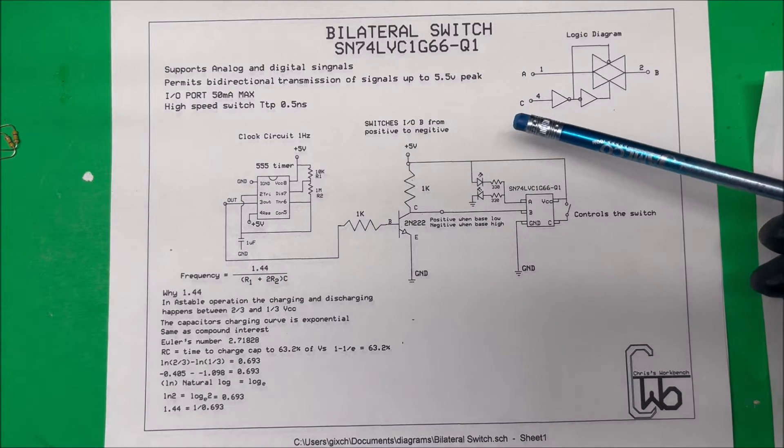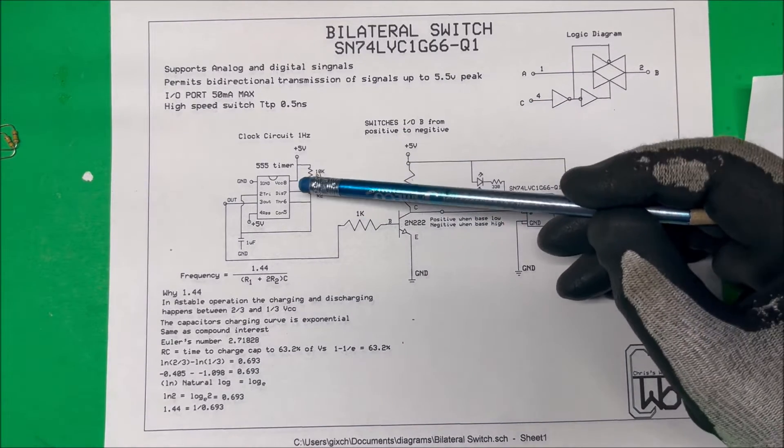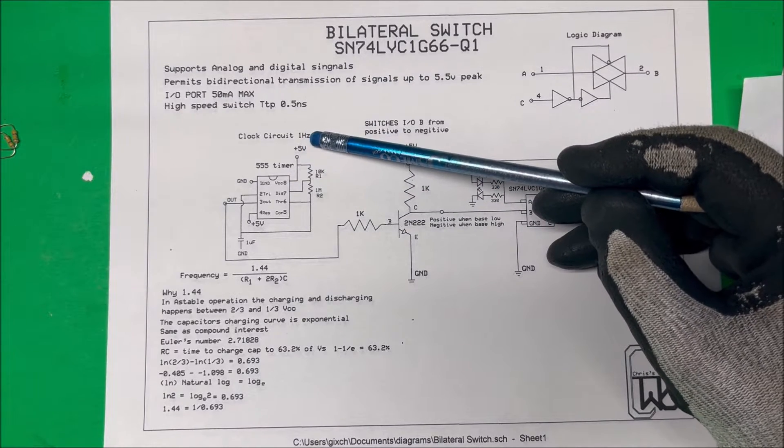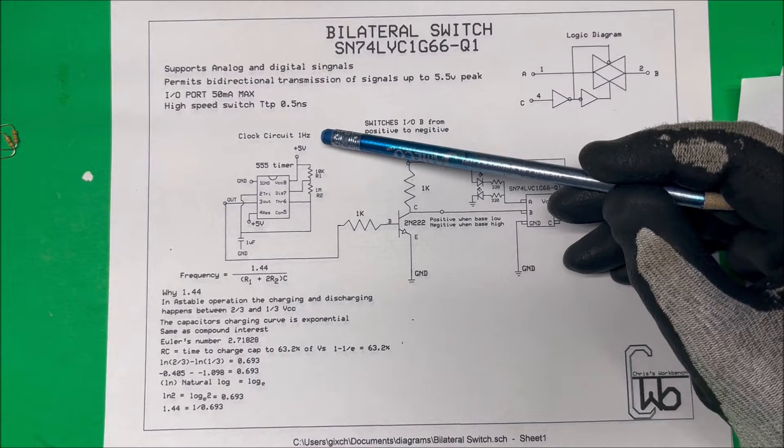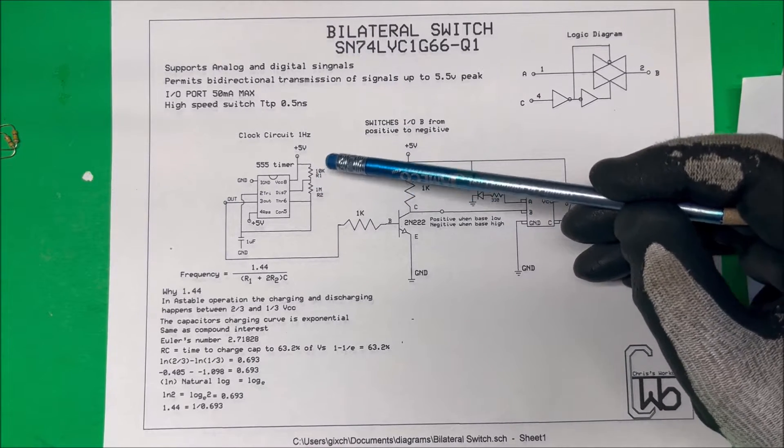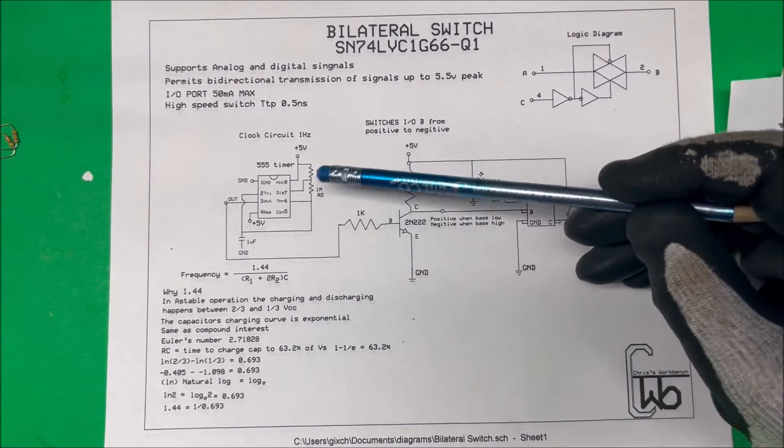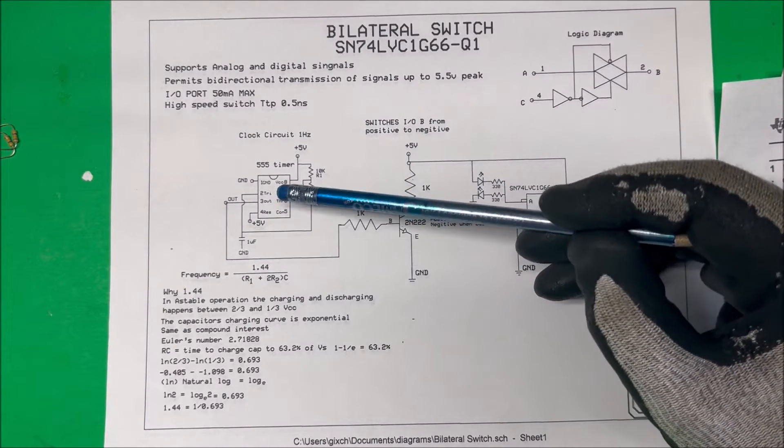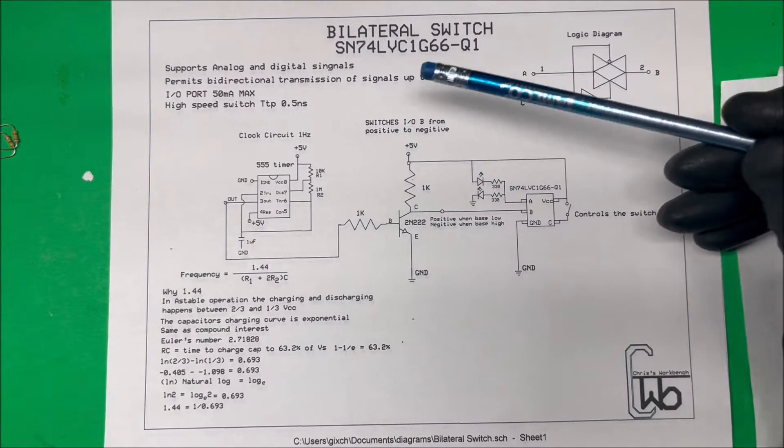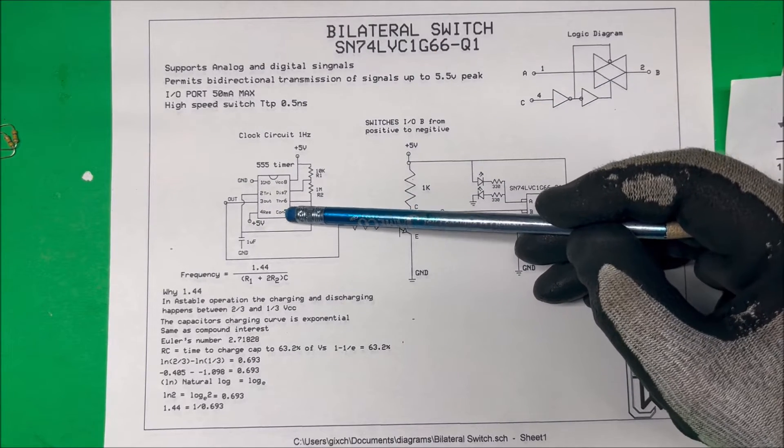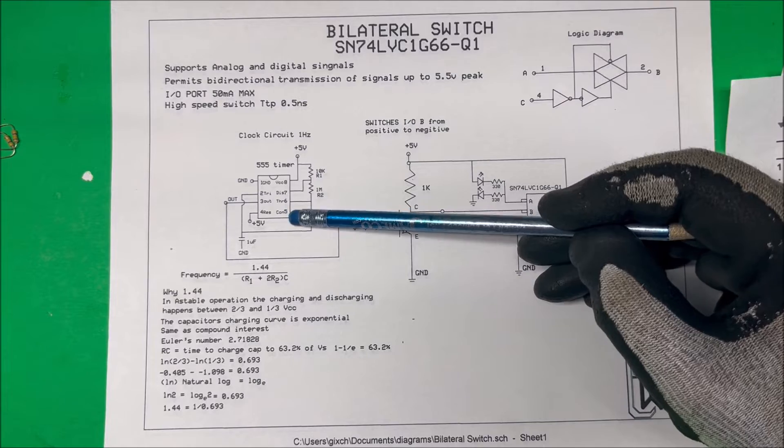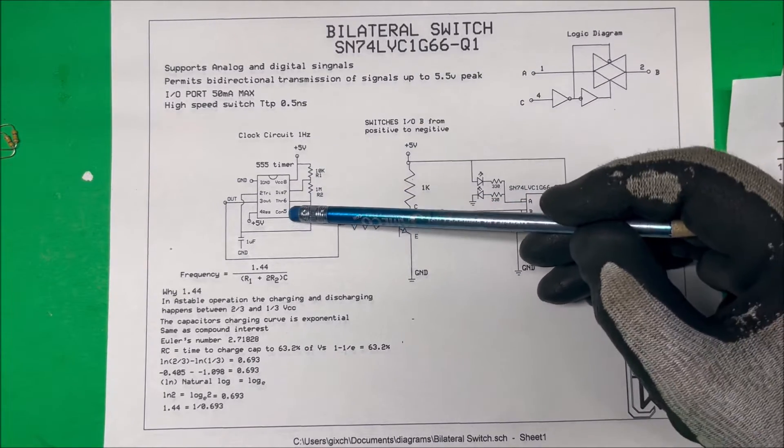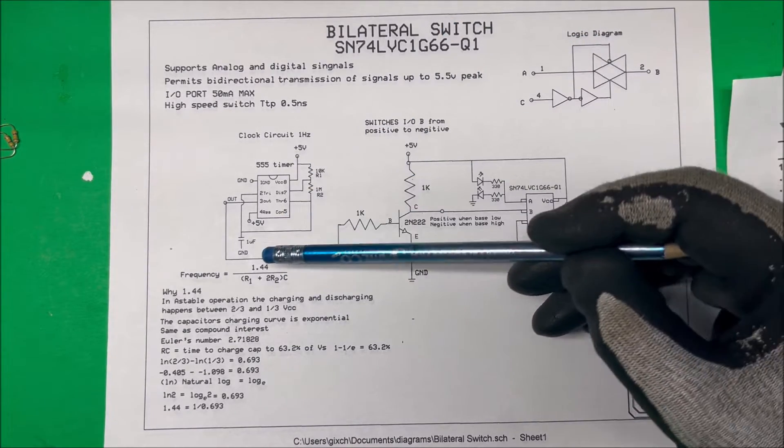In order to do this automatically I put a little 555 timer in here. I set it up to get as close to one hertz as I can with 50 percent duty cycle. With standard size resistors and capacitors I used a 10k here, a one meg here, and a one microfarad capacitor. This is a stable operation, typical operation. From pin 5 I did put a capacitor to ground just to smooth it out a little bit—you don't need that but it helps.